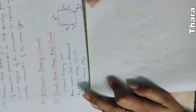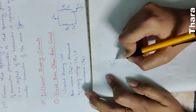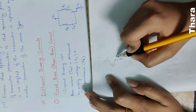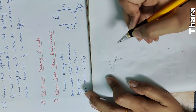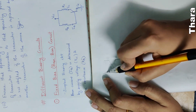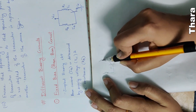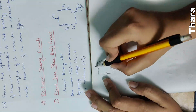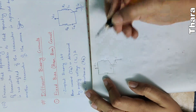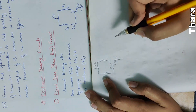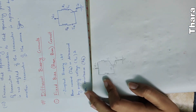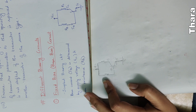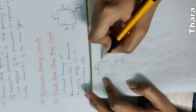You will have a transistor. The transistor has a collector, emitter, and base. If you have a base and a collector, you will have a resistance. You will have DC voltage — plus VCC. This is the base bias circuit. If you have a collector, you will have a resistance RC.